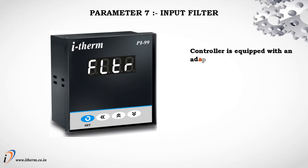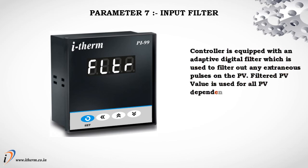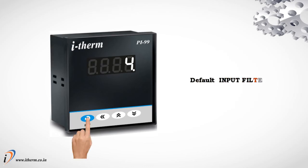Parameter 7: Input Filter. The controller is equipped with an Adaptive Digital Filter, which is used to filter out any extraneous pulses on the process value. The filtered process value is used for all process-value-dependent functions. If the process value signal is fluctuating due to noise, increase the filter time constant value. The default Input Filter Value is 4.